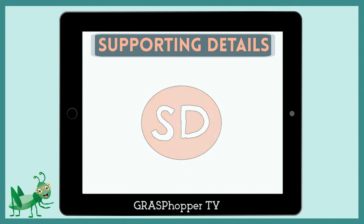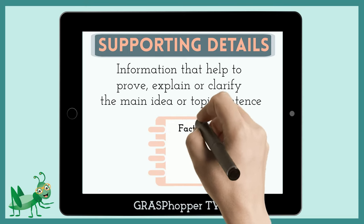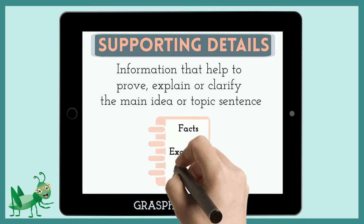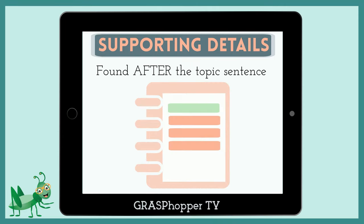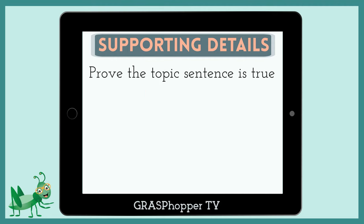Supporting details are information that help to prove, explain, or clarify the main idea or topic sentence of a paragraph. Some types include facts, examples, and reasons. We can find them after the topic sentence in a paragraph. The main thing to remember is that supporting details prove that the topic sentence is true.